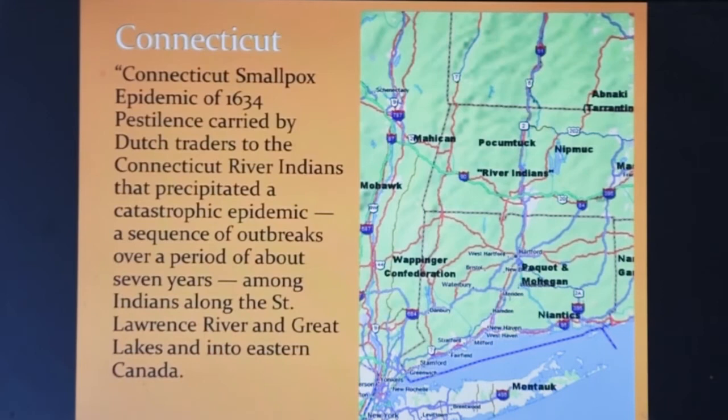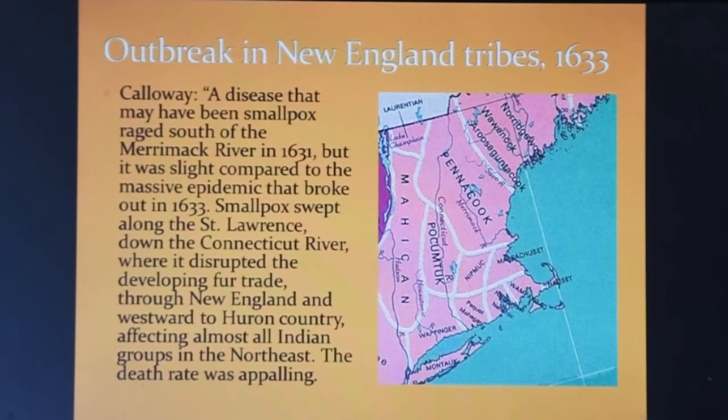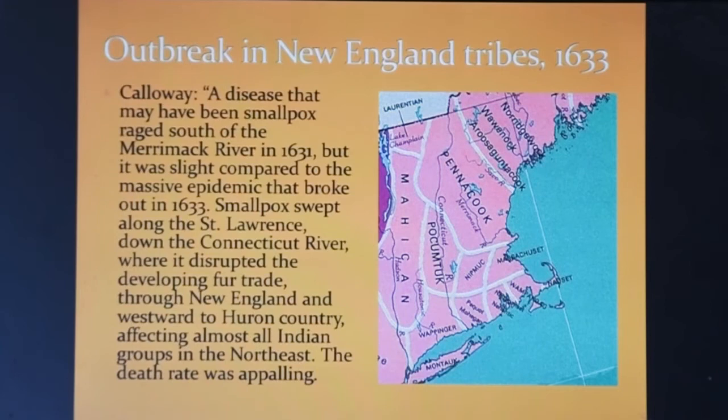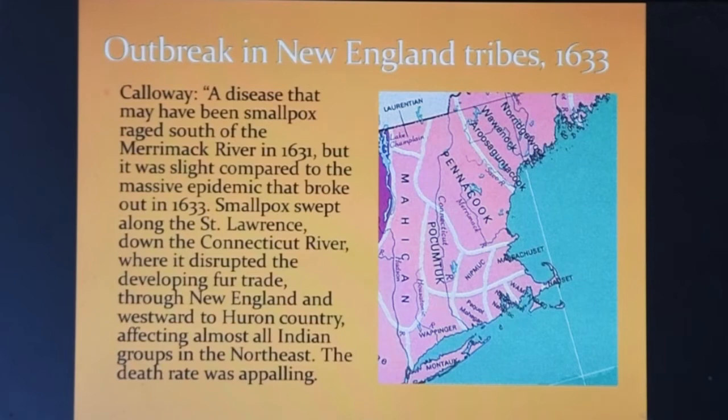Smallpox had become the most destructive disease in New England for the rest of the 17th century. It soon spread to colonial settlements in the Connecticut River Valley in 1634 and then spread throughout the native tribes all the way north to the St. Lawrence River and the Great Lakes into Canada. Author Colin Calloway reported that smallpox first raged south of the Merrimack River in 1631, but starting in 1633 swept along the St. Lawrence and Connecticut Rivers, disrupting the fur trade and affecting almost all American Indian groups in the Northeast with appalling rates of death.